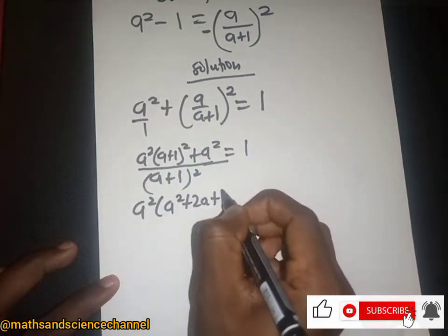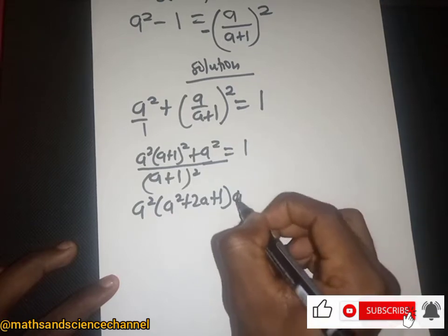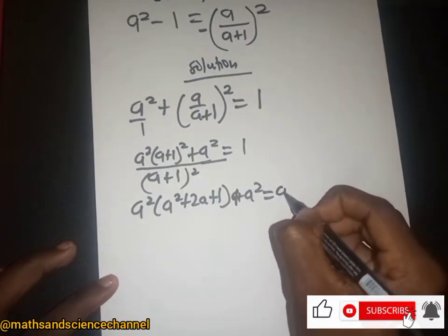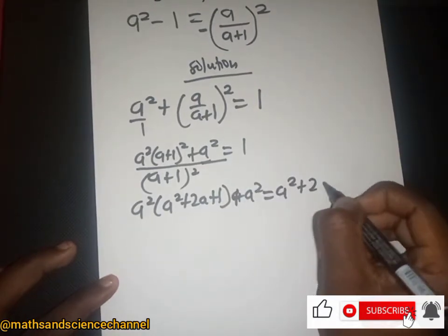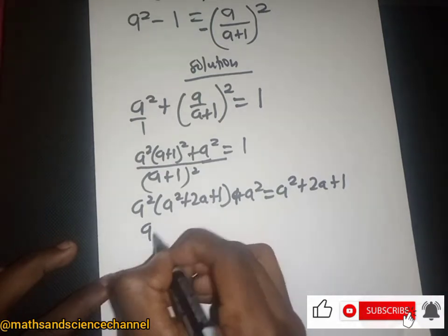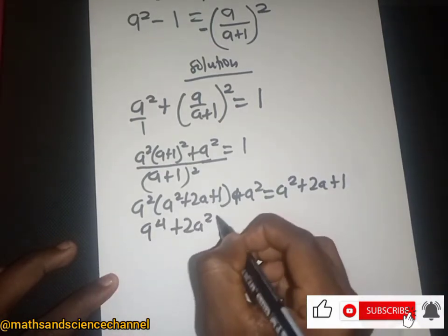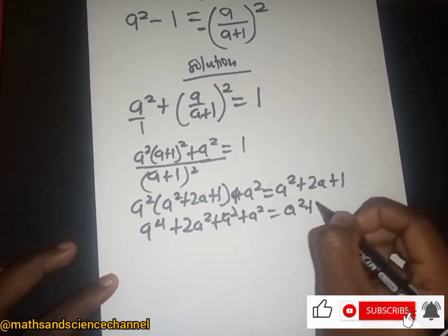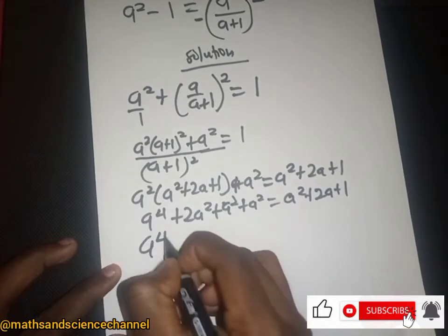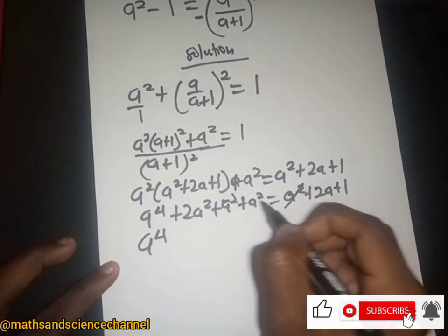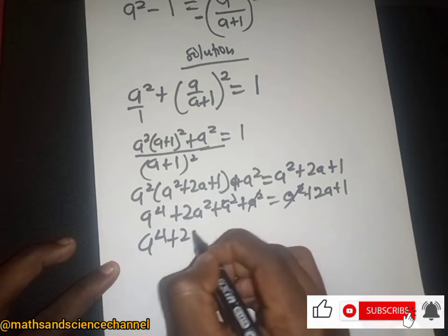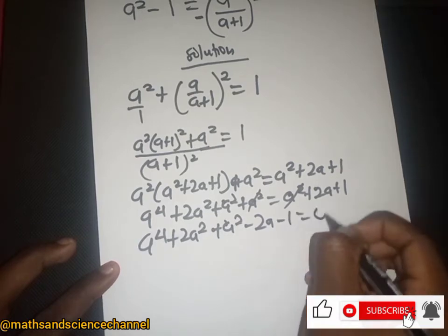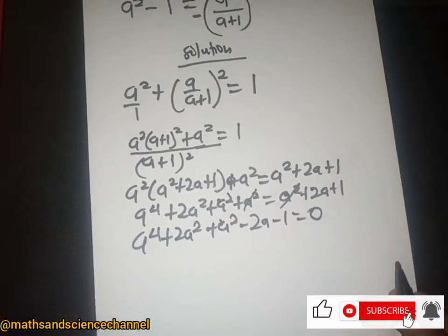Expanding this, we get a squared plus 2a plus 1, then plus a squared, now being equal to one. Sending terms to the other side and expanding, we get 4a, and a squared plus a squared plus a squared being equal to a squared plus 2a plus 1. We're left with plus a squared minus 2a minus 1 equal to zero — a quadratic equation.